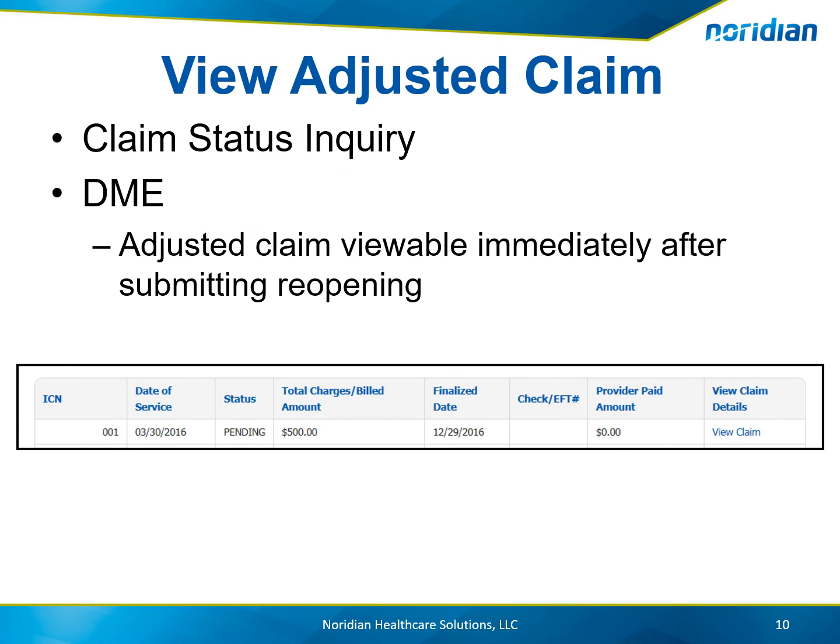To view the claim, perform a claim status inquiry entering the provider combination and the required beneficiary elements. The adjustment with the claim number ending with the number 1 will display in a pending status until it is fully processed.